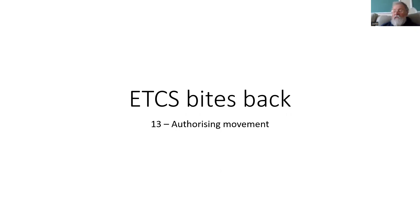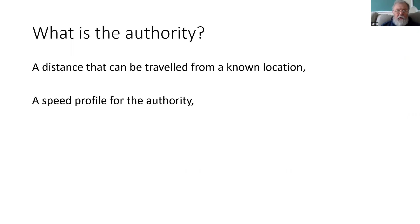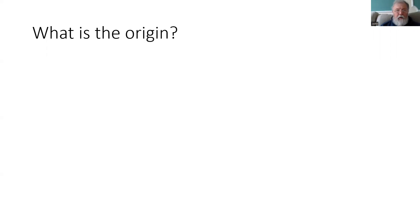Welcome back. We can have a look at what is needed to authorize a movement. What is the authority that's required? The first thing is a distance that can be traveled from a known location. We also need to know the speed for the authority and other information about the route the train will be taking, such as the gradient, other restrictions, electrification, and the like.